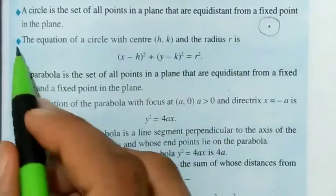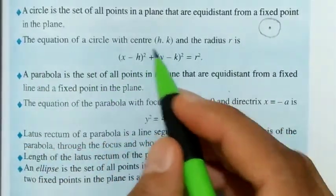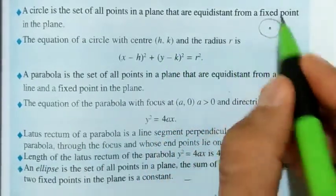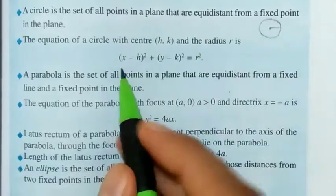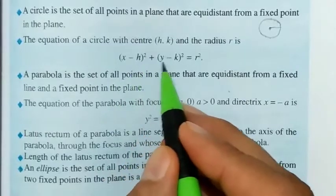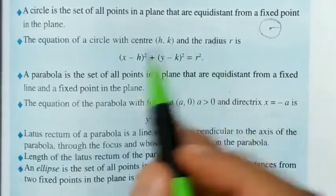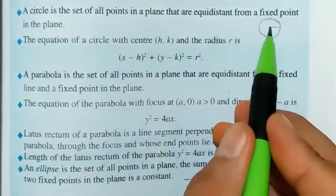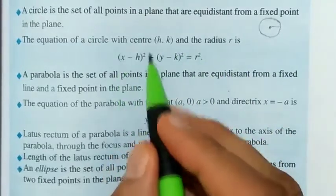The equation of a circle with center (h, k) and radius r is: (x − h)² + (y − k)² = r². If the center is (0, 0) and radius is r, then the equation becomes x² + y² = r².